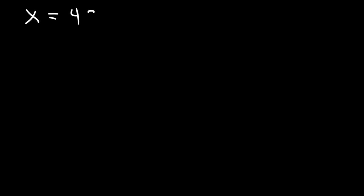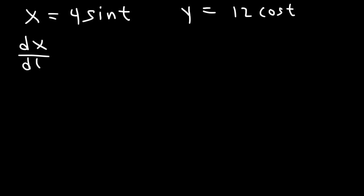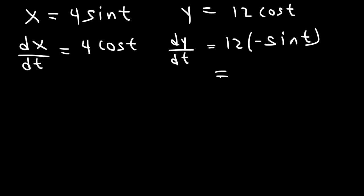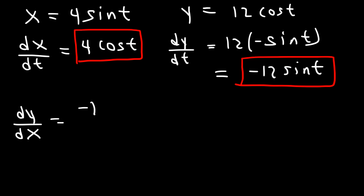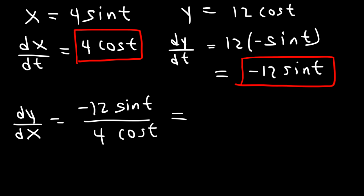Here's another example involving trigonometric functions. Let's say that x is 4 sine t, and y is 12 cosine t. So dx/dt: the derivative of sine is cosine, giving 4 cosine t. For dy/dt, the derivative of cosine is negative sine, so dy/dt is negative 12 sine t. Therefore dy/dx equals negative 12 sine t divided by 4 cosine t. Negative 12 divided by 4 is negative 3, and sine divided by cosine is tangent. So the answer is negative 3 tangent t.